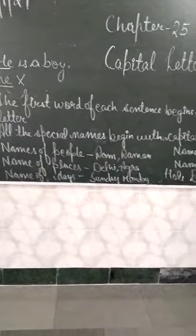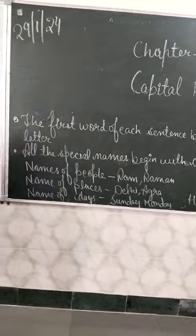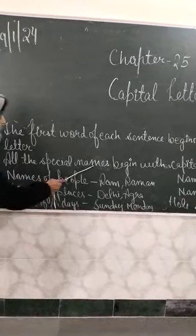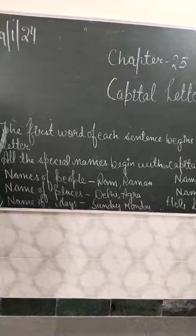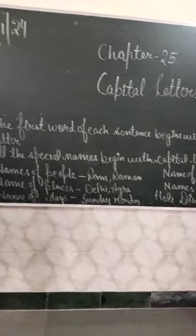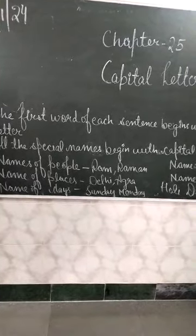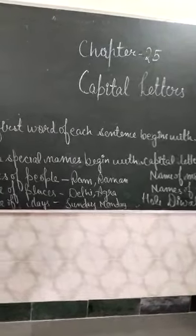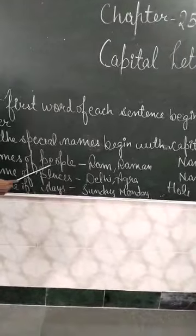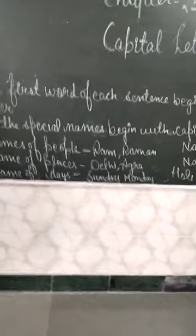Next, all the special names — special names, you can say proper nouns — begin with a capital letter. If you are going to write the name of your friend, like Seema, Radha, Kanchan, you have to start with a capital letter. Names of people, like Ram, Ramal, you have to start with a capital letter.